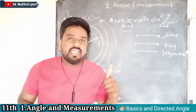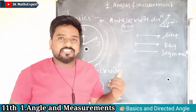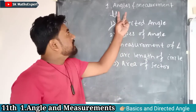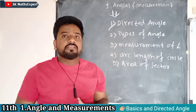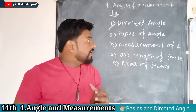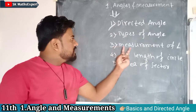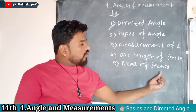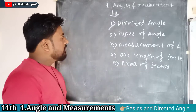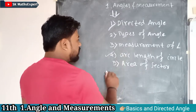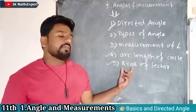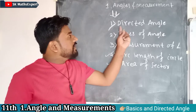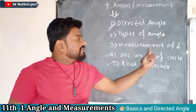Now let's start with the concepts and topics of Angle and Measurement. Under this topic, we will see five important topics: the first is directed angle, second is type of angle, third is measurement of angle, fourth is arc length of angle, and fifth is area of sector. For this academic year, the fourth and fifth points are deleted from our syllabus. So we will cover directed angle, types of angle, and measurement of angles.